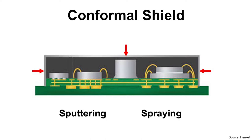EMI shield is done by coating of conductive material, and conductive material needs to include the victim IC. So five sides except the bottom are covered by conductive material, and the bottom side is covered by the ground copper plane of the package substrate.